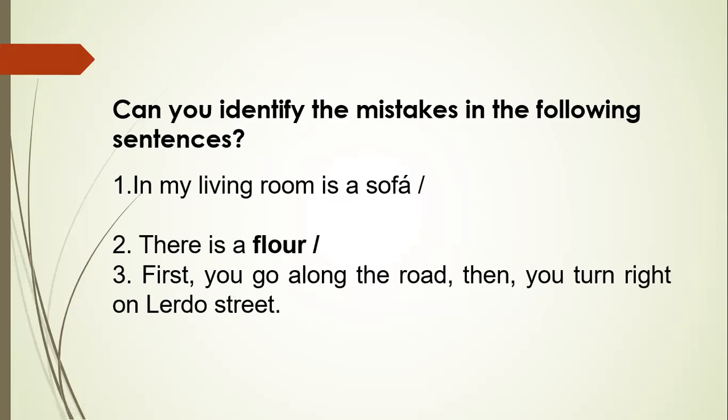Before we start, I would like you to identify the mistakes in the following sentences. Here we have three sentences: 'In my living room is a sofa,' 'There is a flower,' and 'First, you go along the road, then you turn right on Lerdo Street.' Every sentence on the screen has a mistake. Can you identify them?